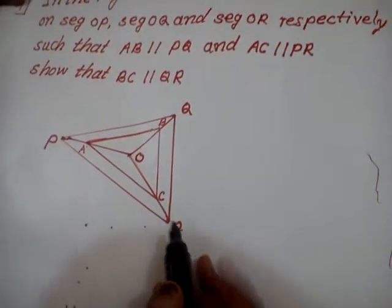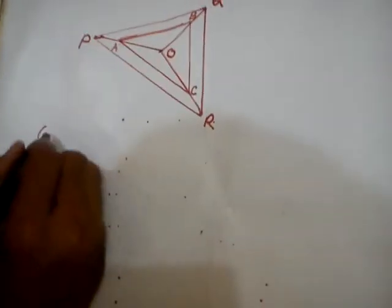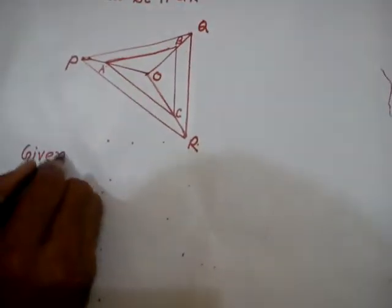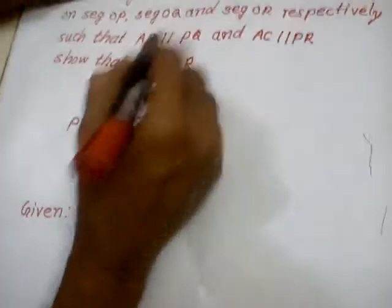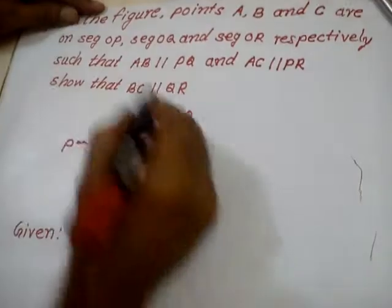Now we have to read what is given to us. First step, what is given to us? Given. What is given? First, in triangle, segment AB parallel to segment PQ.